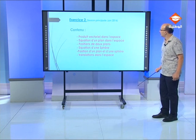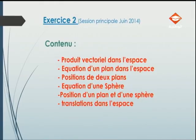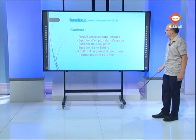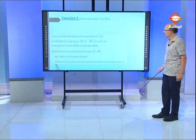Passons à l'exercice numéro 2. Contenu : produit vectoriel dans l'espace, extrait du Bac 2014. Cet exercice porte sur : le produit vectoriel dans l'espace, l'équation d'un plan, la position de deux plans, l'équation d'une sphère, la position d'un plan et d'une sphère, et la translation dans l'espace.